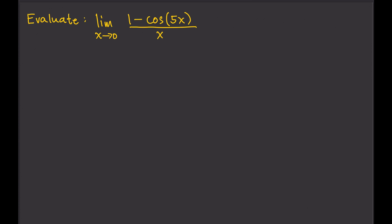So what can we do? Well, this involves cosine, and maybe we can use a known result for cosine. We know that the limit of 1 minus cosine theta over theta, as theta approaches 0, is equal to 0. We know this result right here.